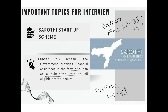Another central scheme is PMFME, which is for food processing industries. If anyone establishes a food processing industry, they can get a 35% subsidy on a bank loan. For example, if someone sets up a chow-making industry and takes a ₹10 lakh loan, they will receive a subsidy of ₹3.5 lakhs from the government.